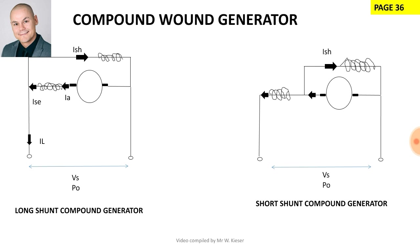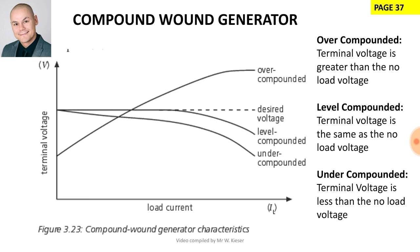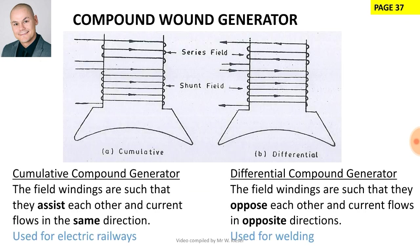A compound-wound generator has both a long shunt and a short shunt — it is a combination of series and shunt windings. An over-compounded generator is where the terminal voltage is greater than the no-load voltage. A level-compounded generator is where the terminal voltage equals the no-load voltage. An under-compounded generator has terminal voltage less than no-load voltage. For a differential compound generator, the windings oppose each other with current in opposite directions, producing a smaller resultant magnetic field. For a cumulative compound generator, the windings assist each other with current in the same direction, producing a larger resultant magnetic field.